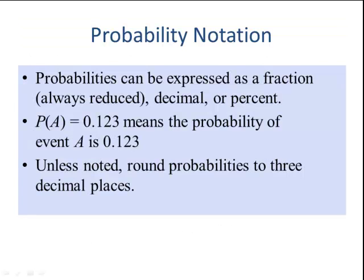Let's look at probability notation. Probabilities can be expressed as a fraction (always reduced), a decimal, or a percent. The notation uses a capital P with the event in parentheses: P(A) = 0.123, which is read as 'the probability of event A happening is equal to 0.123.' Unless noted, we round probabilities to three decimal places.